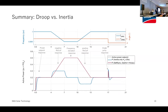I want to show you the difference between an inertial response and a droop response. The red line on the bottom graph is what the inverter is doing in droop mode, and the blue line is an inertial response. In droop, you are proportional to the change in frequency, whereas in inertial control mode, we're acting in proportion to the rate of change of frequency — the derivative. They're quite different and have different benefits to the grid in terms of bringing stability to the network.